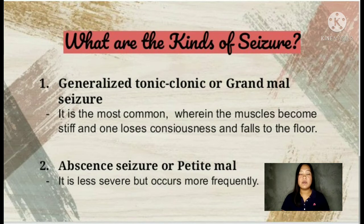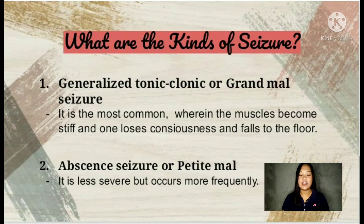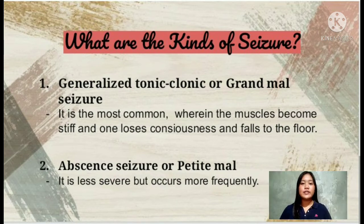The generalized tonic-clonic seizure is the most common, wherein muscles become stiff and one loses consciousness and falls to the floor. It involves violent shaking of the body while muscles contract and relax alternately.